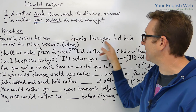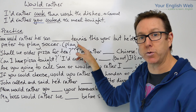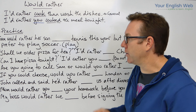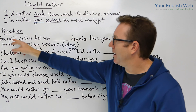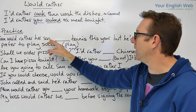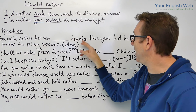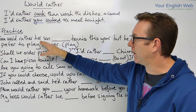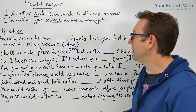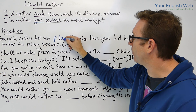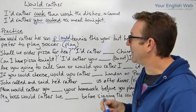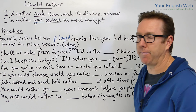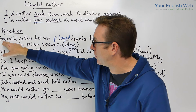Now let's practice. Look at the sentence and put the verb into either past tense or infinitive according to whether we're involving somebody else. 'Sam would rather her son [play] tennis this year, but he'd prefer to play soccer.' Since we have 'her son' as a second subject, the answer is: 'Sam would rather her son played tennis this year.'